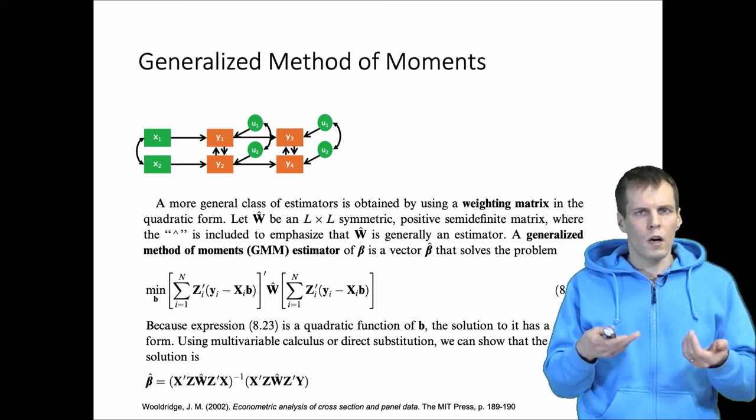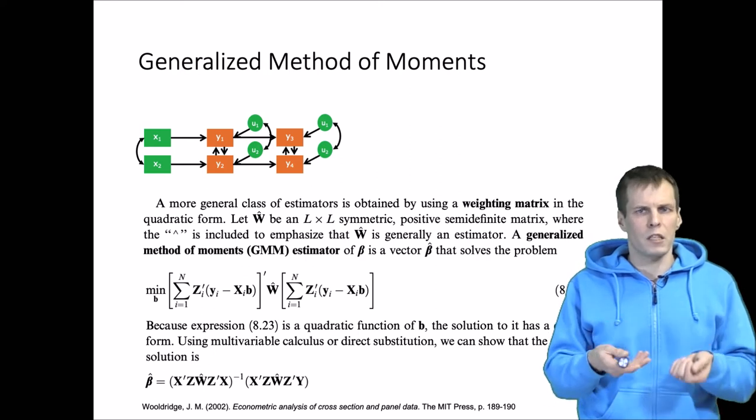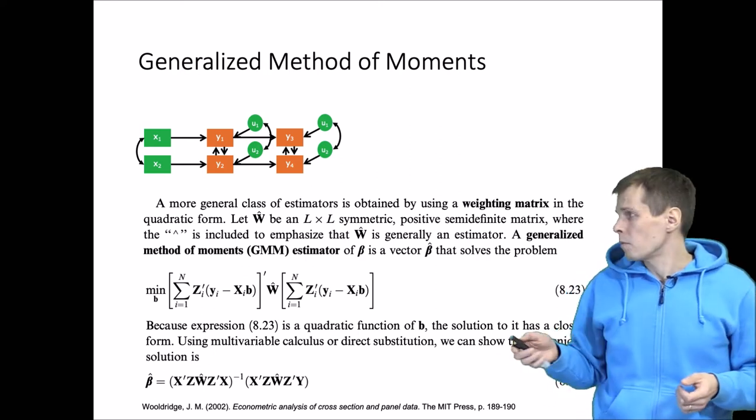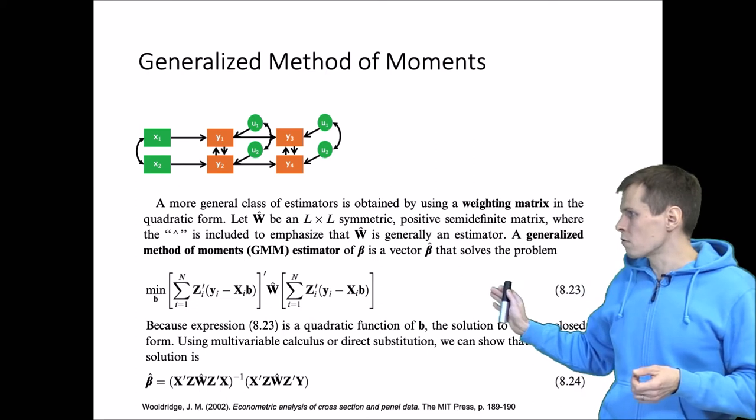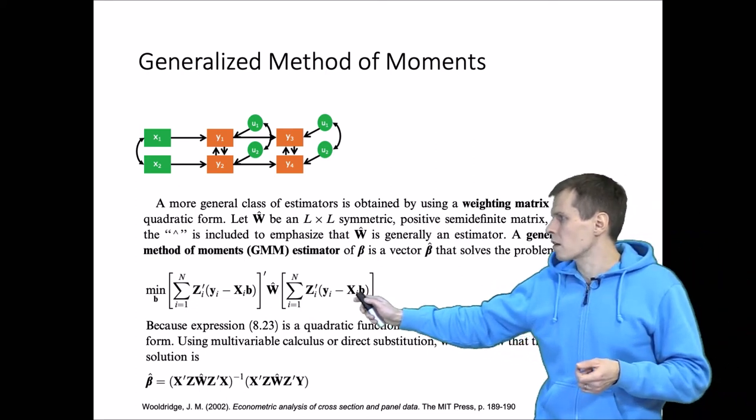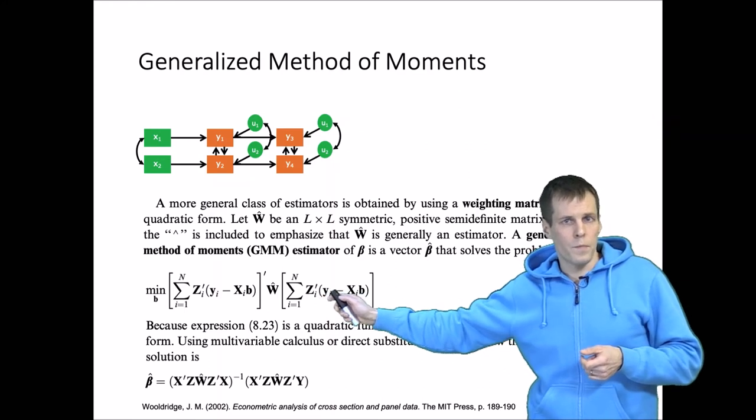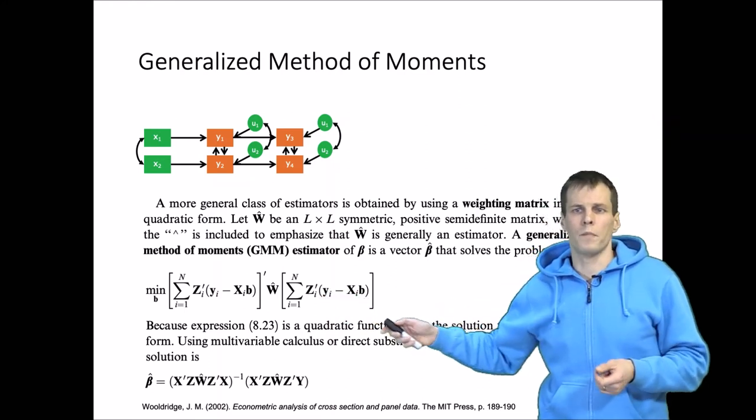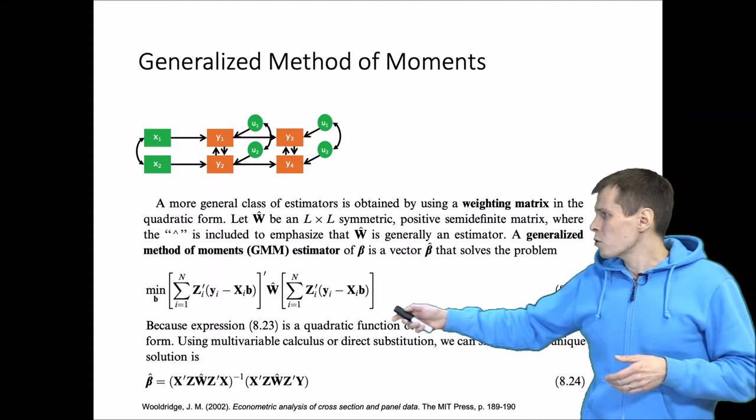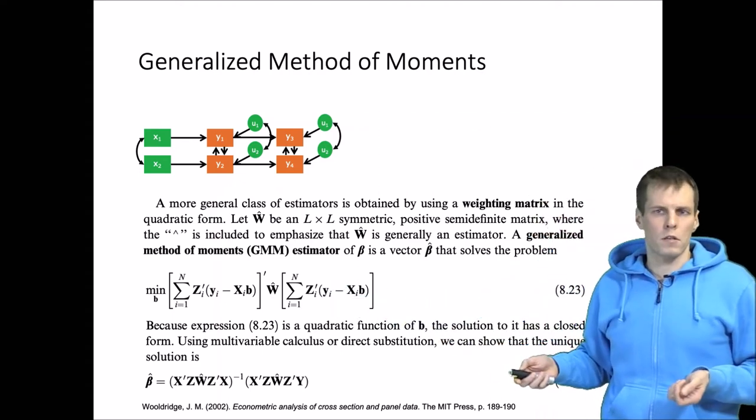To address that, we have generalized method of moments, and generalized method of moments look similar. We have the method of moments here, where we multiply instrument with the residual, but we also have this W here. So what's the meaning of this equation?